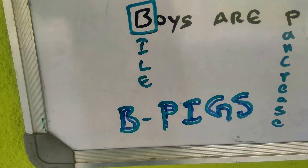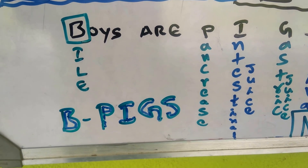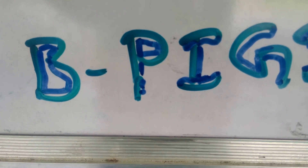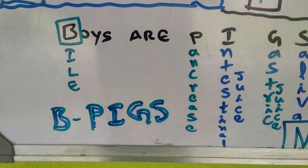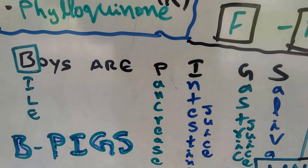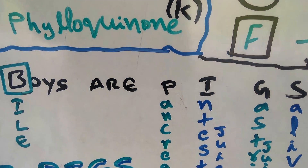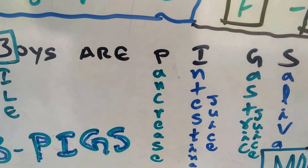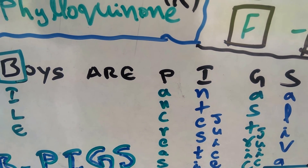For enzymes produced by the digestive system, the statement is 'Boys are pigs' — BPIGS: B for bile juice, P for pancreatic juice, I for intestinal juice, G for gastric juice, S for saliva. In order from the buccal cavity outward: saliva first, then gastric juice, then bile juice and pancreatic juice, and finally intestinal juice.